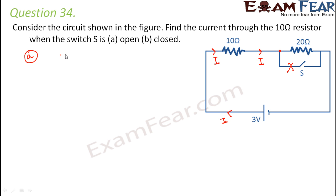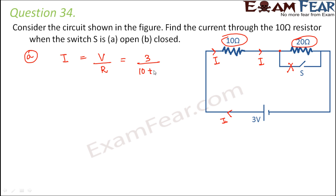In this case, the current flowing through the conductor would be V by R. The value of V for the circuit is 3 volts. This current will pass through the two resistors — 10 ohms and 20 ohms — so net resistance would be 10 plus 20 = 30 ohms. Therefore current is 3 by 30 which equals 0.1 ampere — this is the current through the 10 ohm resistor when the switch is open.